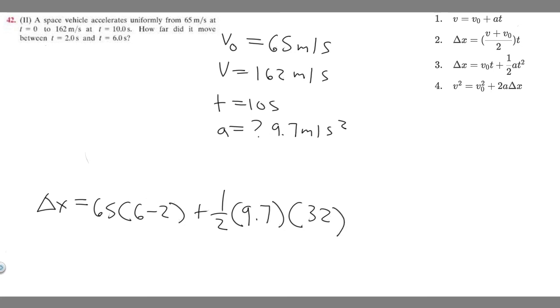So we've got 65 times 4 plus one half times 9.7 times 32. I'm not going to multiply this out, you can do it yourself. If you multiply this out you're going to get about 415 meters. That's the distance traveled between t equals 2 seconds and t equals 6 seconds. So 415 meters is your final answer.